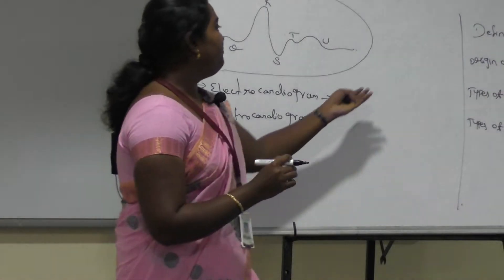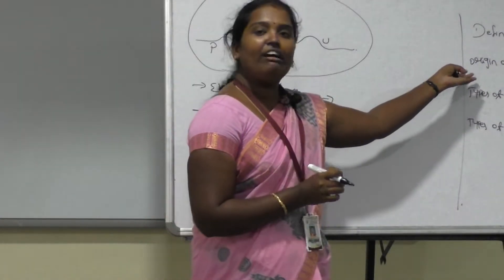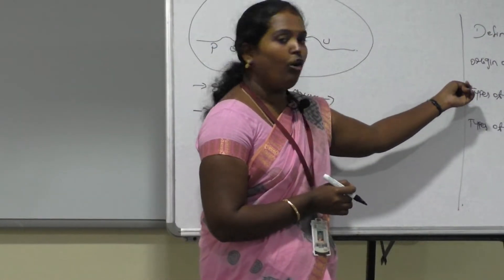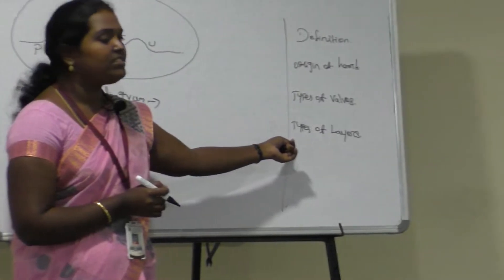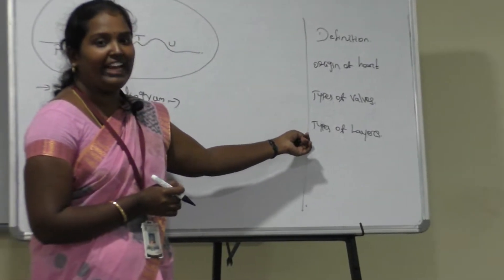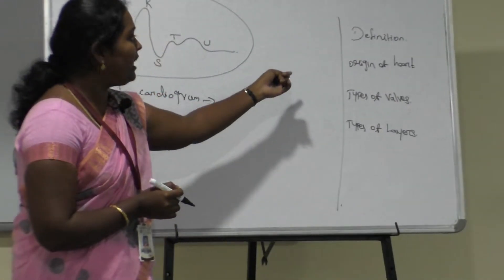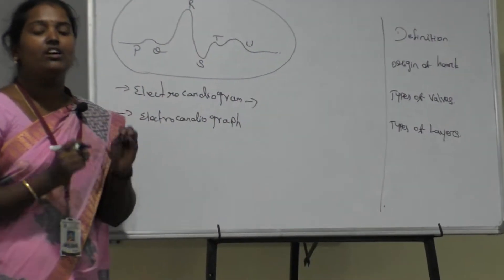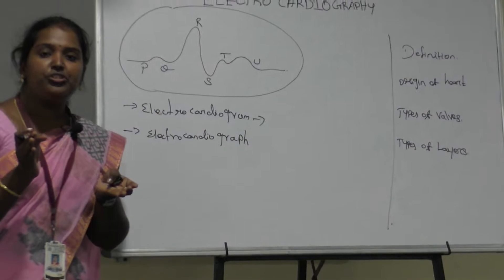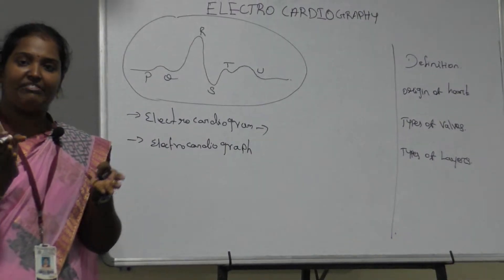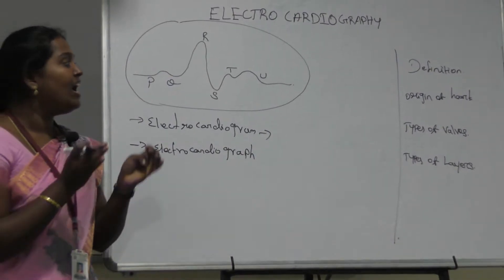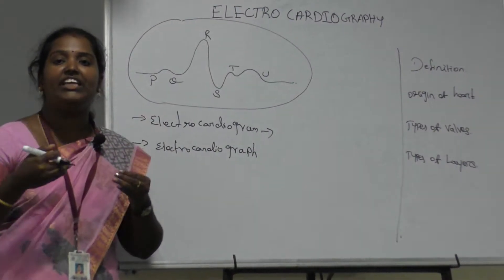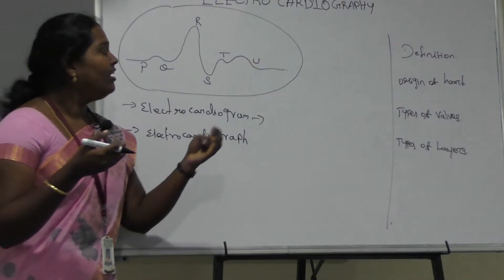The main agenda of this topic covers: definition, origin of the heart, types of walls (valves), and types of layers. The definition of ECG is that it can be used to show the electrical activity of heart muscles, and at the same time it helps us identify different cardiac disorders.